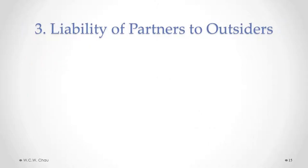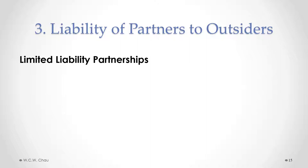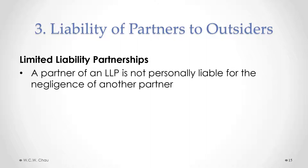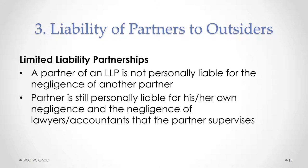The rules regarding liability are slightly different for limited liability partnerships or LLPs. Remember that LLPs are available only to accountants and lawyers. A partner of an LLP is not personally liable for the negligence of another partner. If a client sues the firm for negligence, the partner who committed the negligence is personally liable — their personal assets are at risk — but the personal assets of other partners are not. A partner is also personally liable for the negligence of other lawyers or accountants in the firm that that partner supervises.